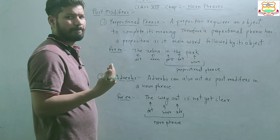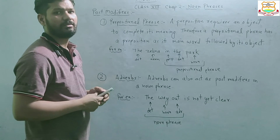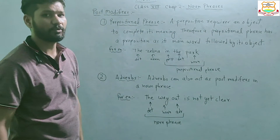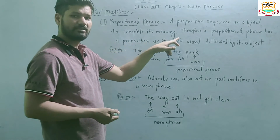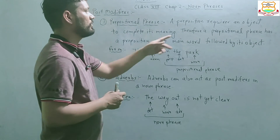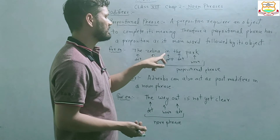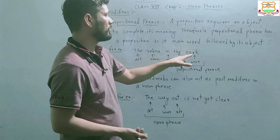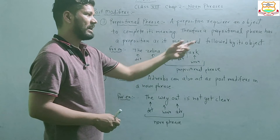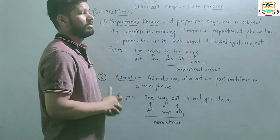Now we will learn about post-modifiers. A post-modifier is a modifier which comes after the noun. The first type is a prepositional phrase. A preposition requires an object to complete its meaning. Therefore, a prepositional phrase has a preposition as its main word followed by its object. A prepositional phrase in itself is a post-modifier.